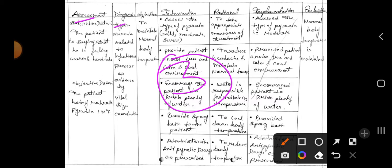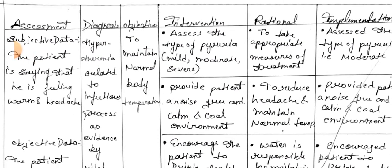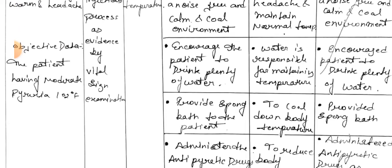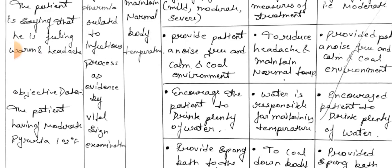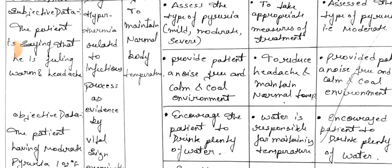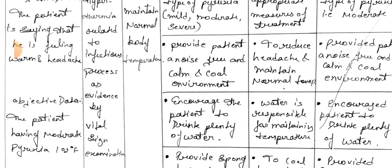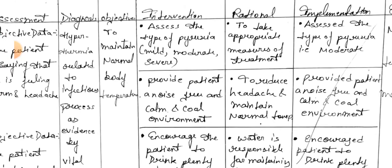Care plan three — assessment, diagnosis, objective, intervention, rational, implementation, evaluation. Subjective data: the patient is saying that he is feeling warm. Objective data: the patient has moderate pyrexia at 102 degrees Fahrenheit. Diagnosis: hyperthermia related to infectious process as evidenced by vital sign examination. Goal: to maintain normal body temperature.